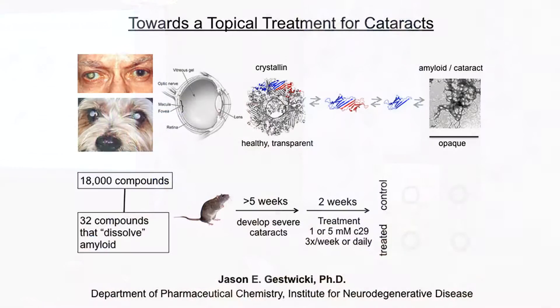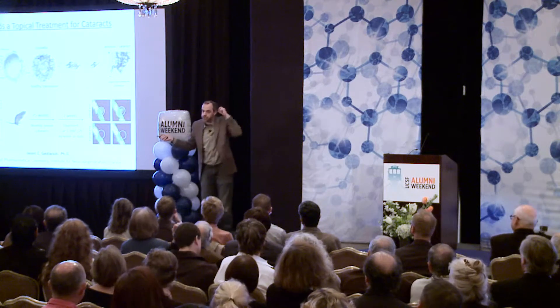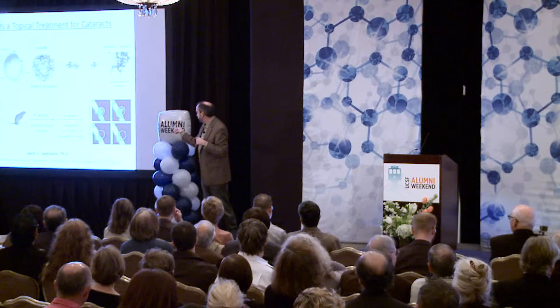We ran this screen and found molecules that stabilize the healthy, transparent form. When we took a mouse that becomes completely blind, we treated its right eye with this small molecule in a topical formulation. The first ones we did, we just went to the local pharmacy, bought some saline eye drops, poured everything out, and put our molecule into the eye dropper — because we weren't very sophisticated, we're chemists. We found that two weeks of treatment, Monday, Wednesday, and Friday — a single drop on the right eye — allowed the molecule to penetrate into the lens and reverse the process.